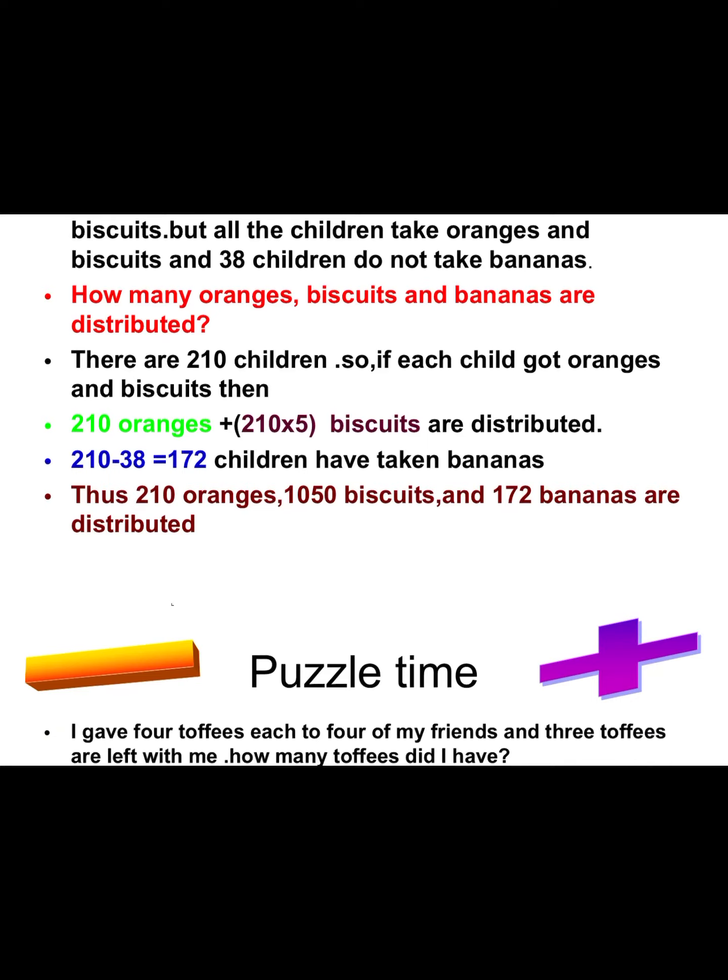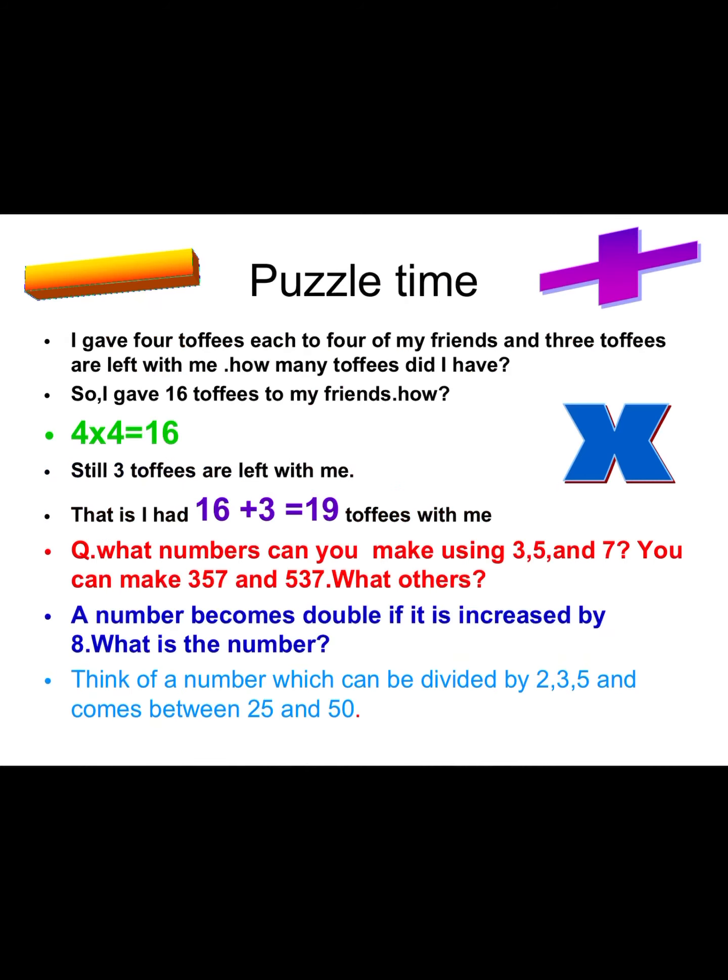Now, children, have a puzzle time. I gave 4 toffees each to 4 of my friends, and 3 toffees are left with me. How many toffees did I have? There are 4 friends and 4 toffees each, so 4 × 4 = 16 toffees have been distributed. And after that, 3 toffees are remaining with me. So I had 16 + 3 = 19 toffees with me.